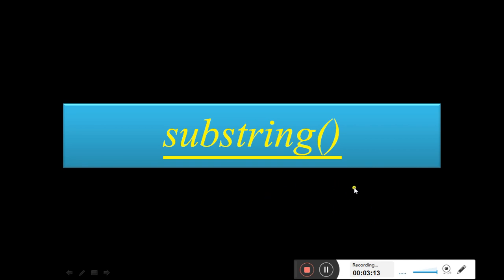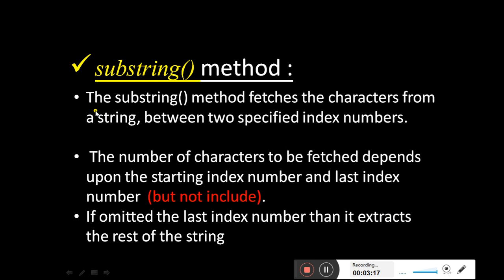Today's topic is the substring method. The substring method fetches the characters from a string between two specified index numbers. Unlike substr, where the second parameter is the number of characters, in substring the second parameter is the last index number. However, it does not include that last index number — it displays the string before the last index number. If the last index number is omitted, it will extract the rest of the string till the end.